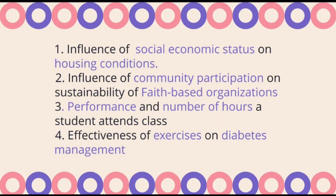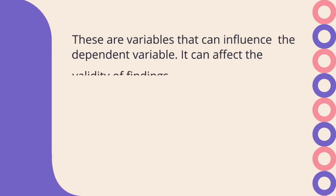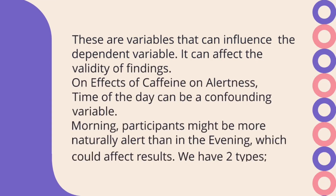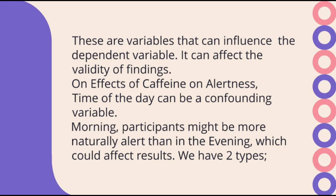I hope you have gotten an overview. In case you have any question, please put it in the comment section — I'll make sure I reply. Type number two is confounding variables. By definition, a confounding variable is a variable that can influence the dependent variable. In simple terms, it can affect the validity of findings.